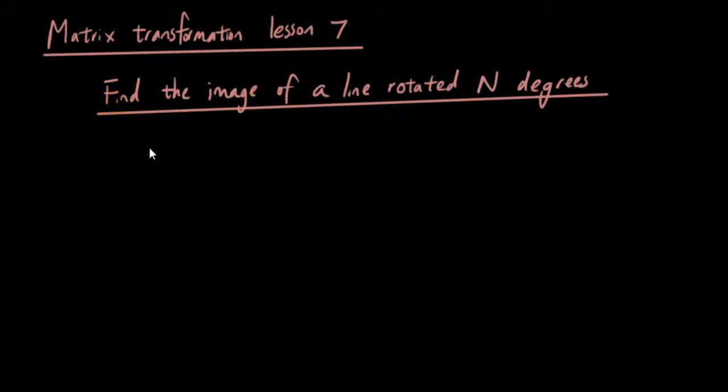Hello everyone, this is Eddie the Magic Monk. Welcome to another matrix transformation tutorial. Today we're going to talk about how to find the image of a line rotated n degrees about the origin. I forgot to add that little bit in, about the origin.